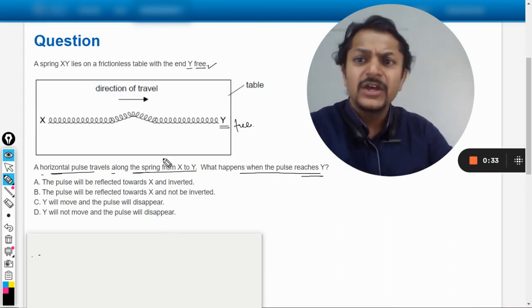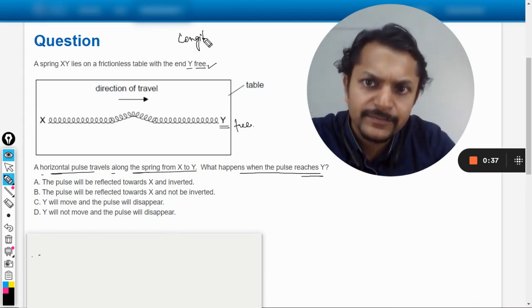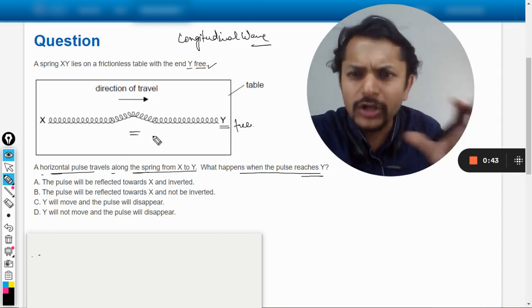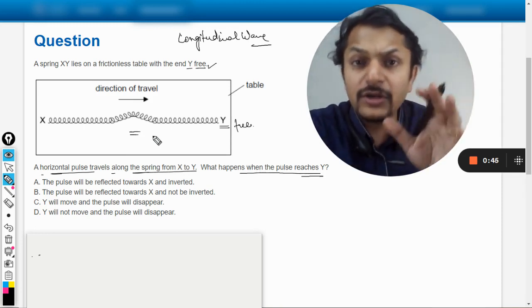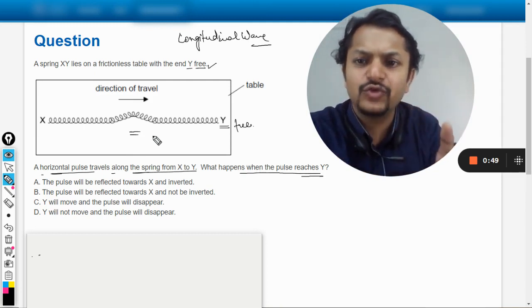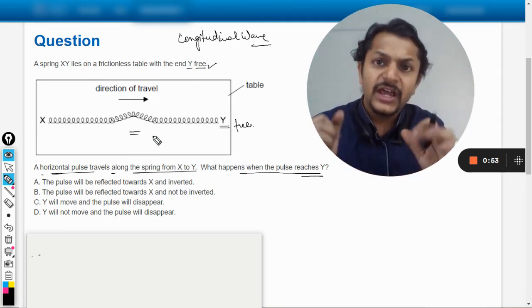In this question, they're talking about the longitudinal wave first of all, and the diagram that they have drawn is I would say not perfect from longitudinal wave point of view. Like they have eventually ended up at showing a crest there, but it is not a crest, it's compression.